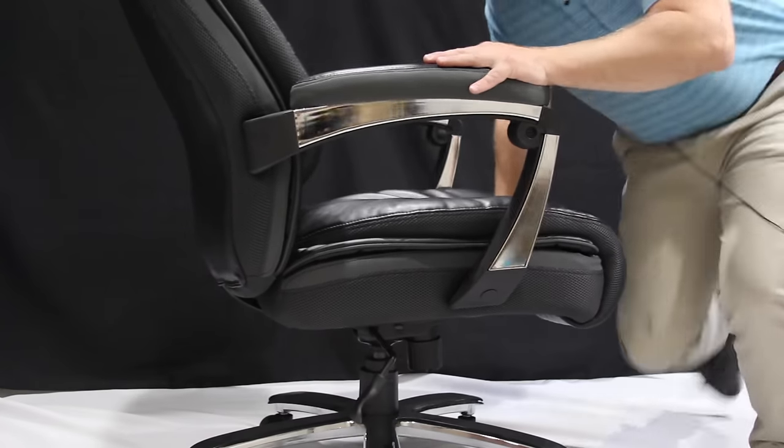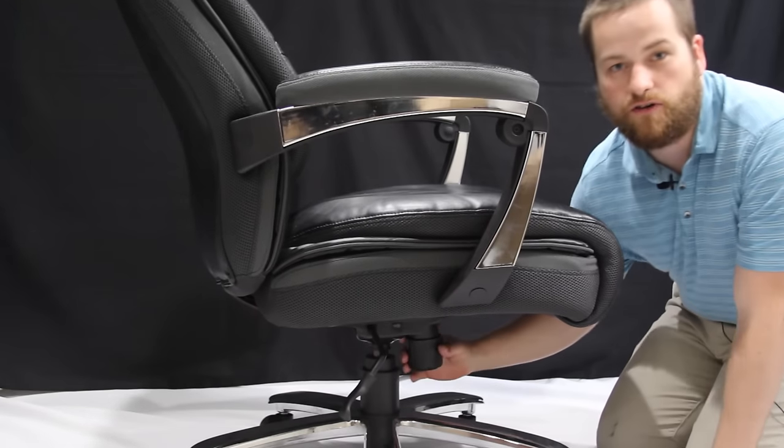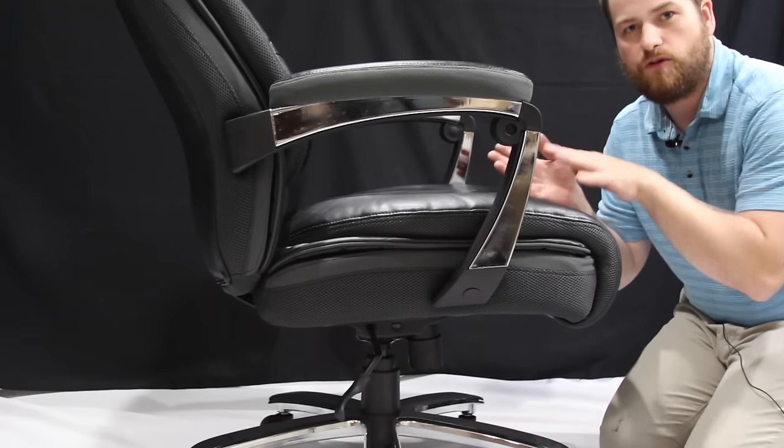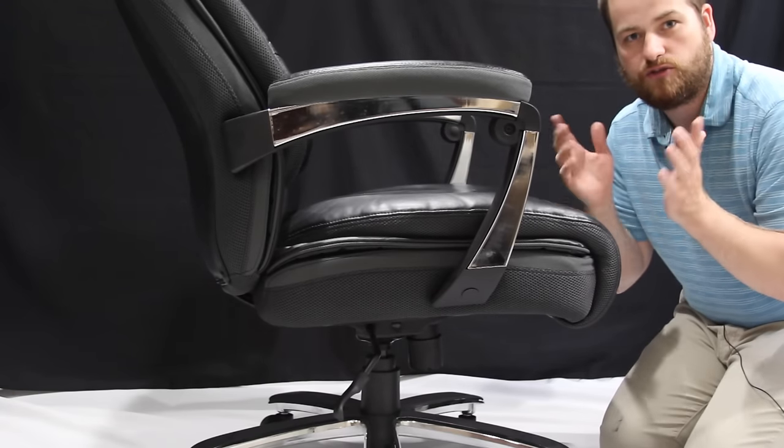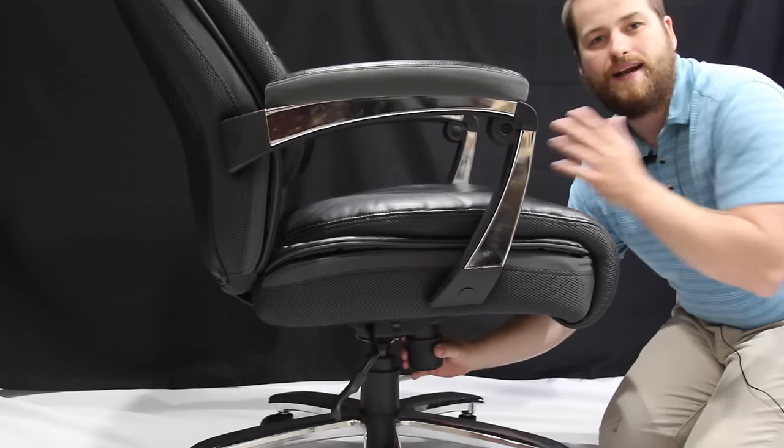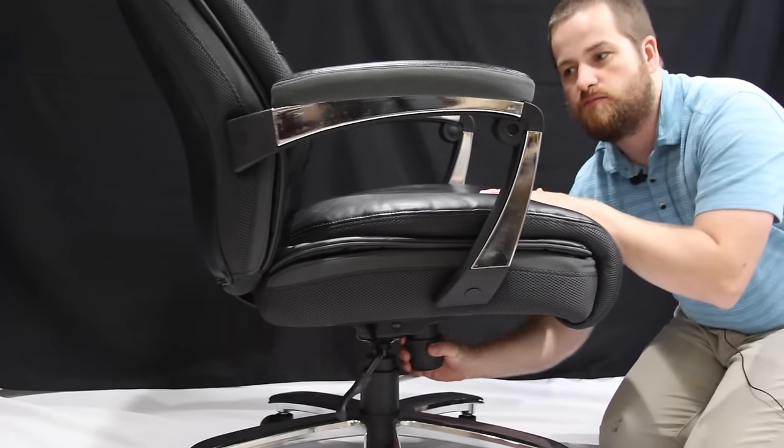To adjust the tilt tension, there's a knob underneath the front of the chair. If you flip the chair backwards, there's usually a plus or minus that will show you which way to turn it. But I know currently this chair is in the maximum position.